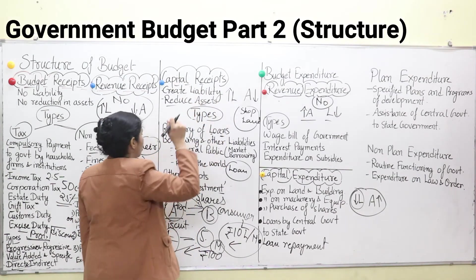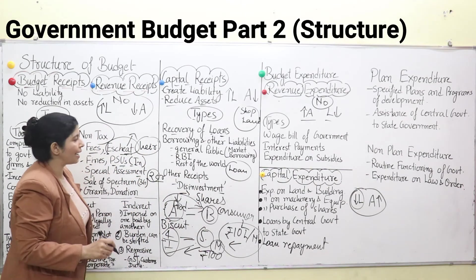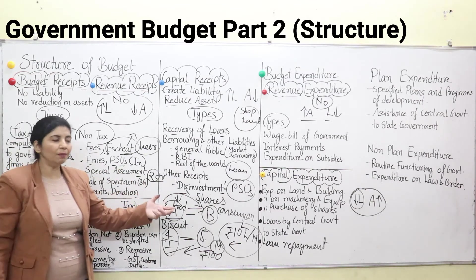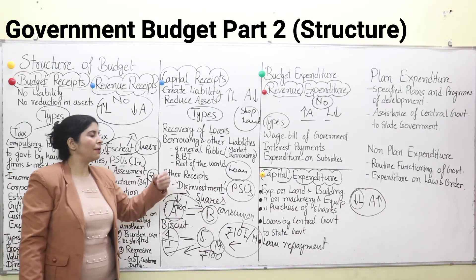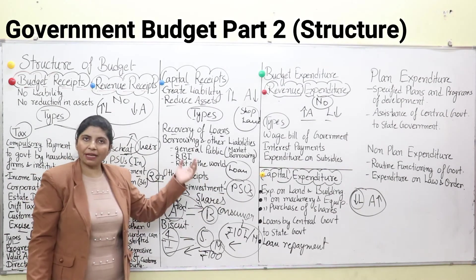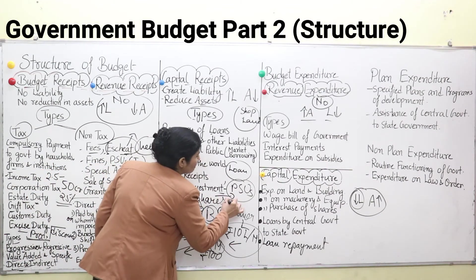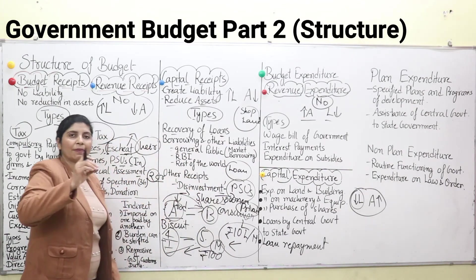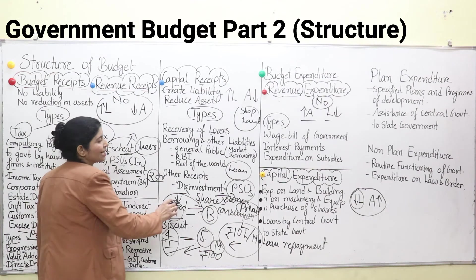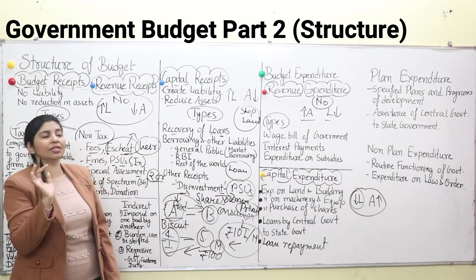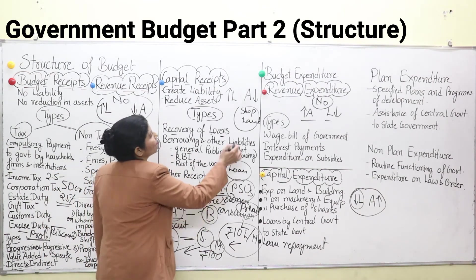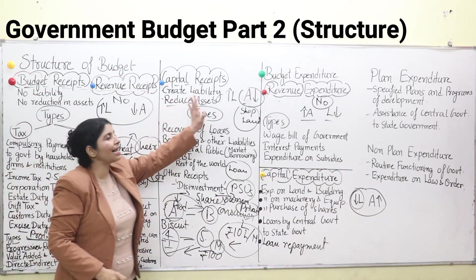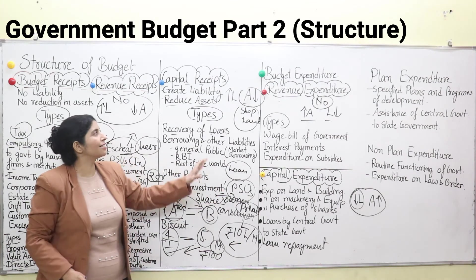Capital receipts are those receipts which increase the liability of the government. Then there are other receipts — disinvestment. In this case, public sector units that are not functioning well, which are sick or under some problem, can be sold to the private sector and their ownership transferred to the private sector. Right now in 2020, 23 public sector ventures have been selected for disinvestment. By selling the shares or units of public sector units, the government gets money, but this decreases the assets of the government — so it is again capital receipts. Disinvestment causes a decrease in assets of the government as it is selling its property.